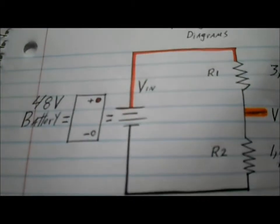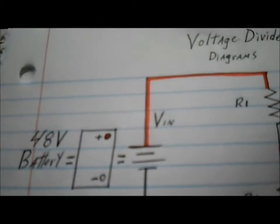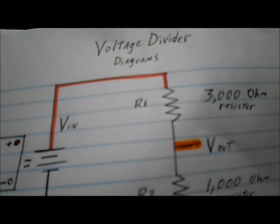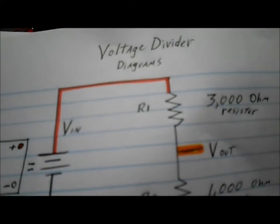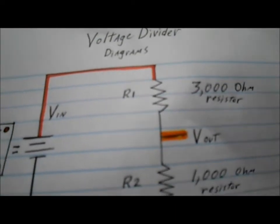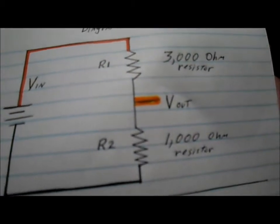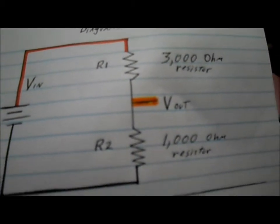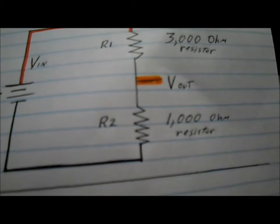Basically you get the battery. The red wire will be the voltage in, and it will have a 3000-ohm resistor. Then voltage out will be 12 volts, and the second resistor will be a 1000-ohm resistor connecting back to our battery pack.